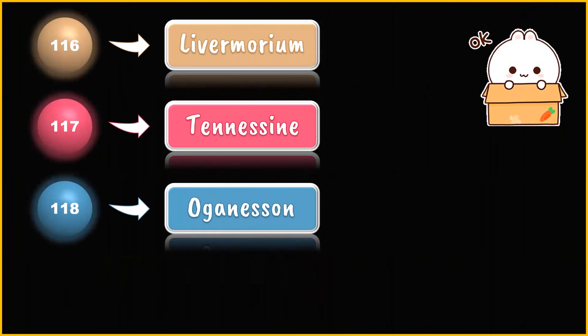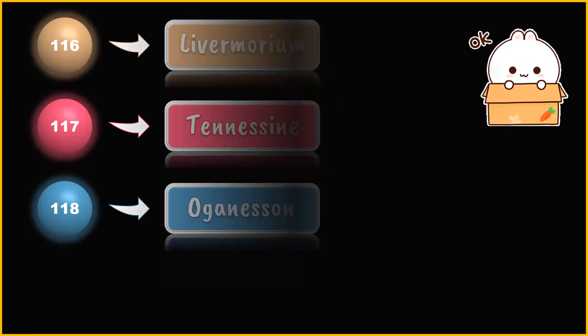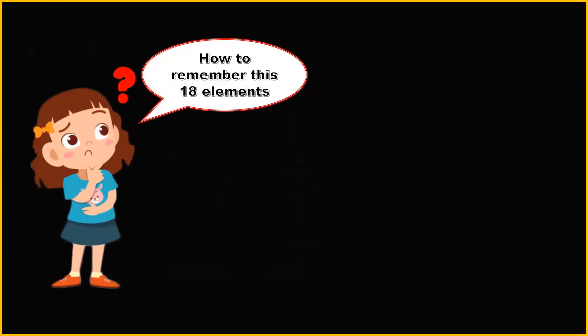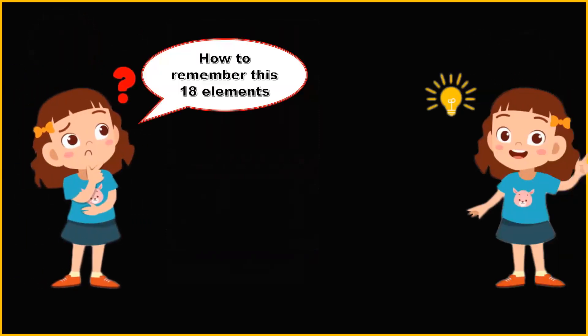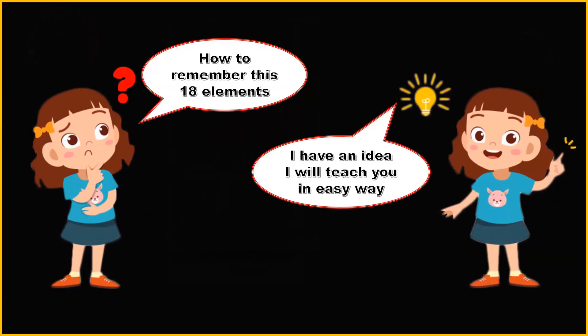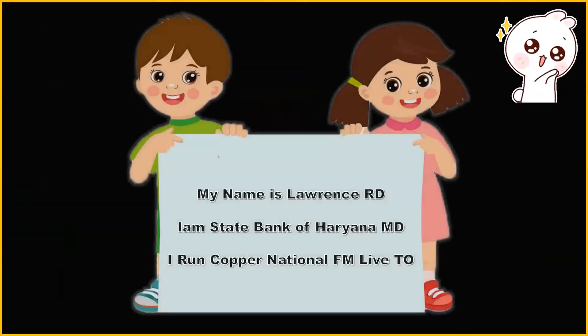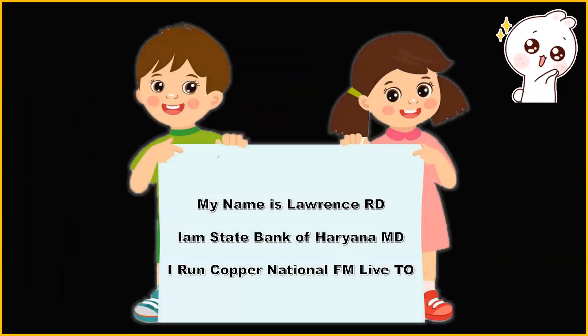You repeated the names of the elements with me, right? You are feeling a little difficulty, but don't worry — I am there to explain you in the easiest way. I am going to teach you now a mnemonic. It's like three small sentences. Just write those three sentences in your book.